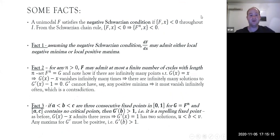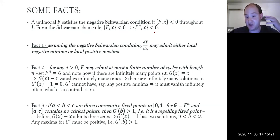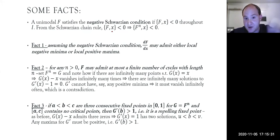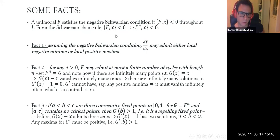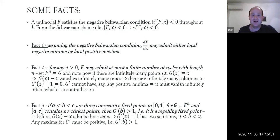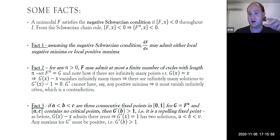A unimodal function f satisfies the negative Schwarzian condition provided its Schwarzian derivative is negative throughout the interval — meaning the critical point can be considered a removable singularity for the Schwarzian derivative, and the condition holds away from the critical point. From the Schwarzian chain rule, if this Schwarzian derivative is negative then the same is true for the Schwarzian derivative of any iterate.